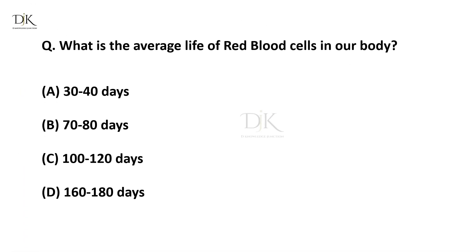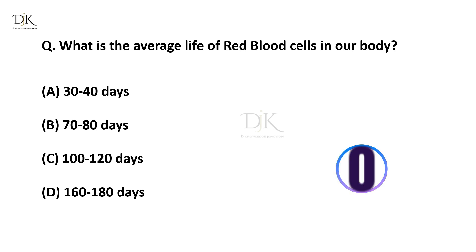What is the average life of red blood cells in our body? The right answer is 100 to 120 days.